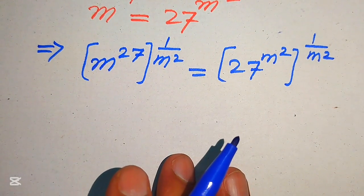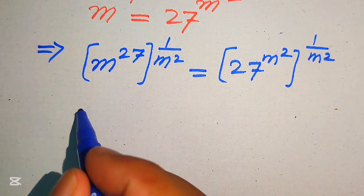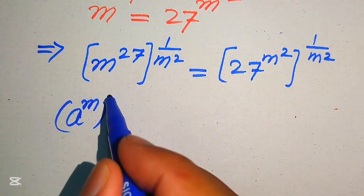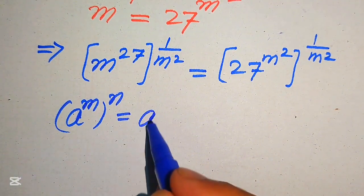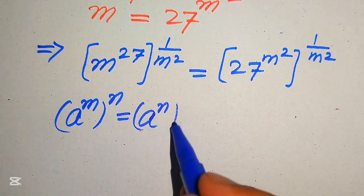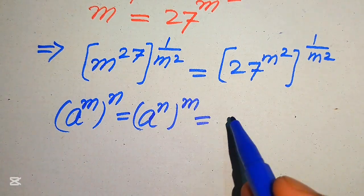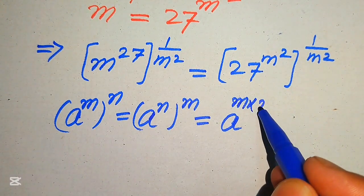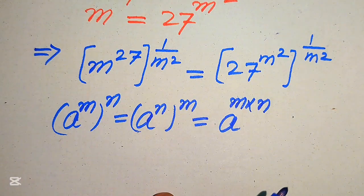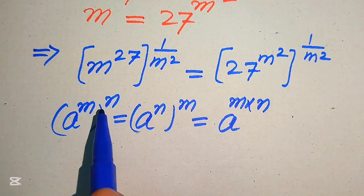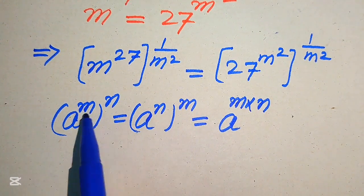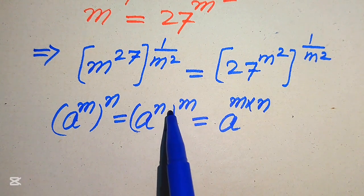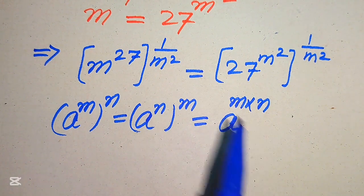In the next step we apply the exponent law: if you have a to the power of m to the power of n, it equals a to the power of n to the power of m, which equals a to the power of m multiplied by n. This means we can interchange or multiply these two exponents.